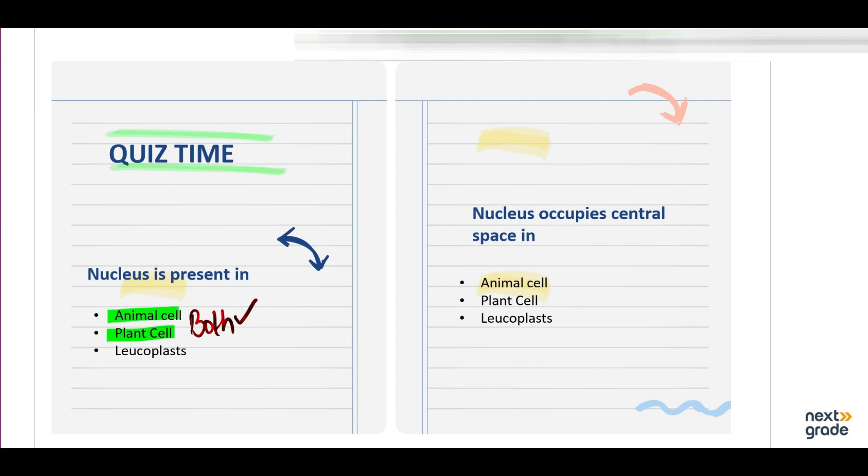As we know that in plant cells there is a large vacuole that is present, due to which the nucleus is pushed to the periphery. However, in the animal cell it is present in the center and it occupies a central space. So here, animal cell is the correct answer.